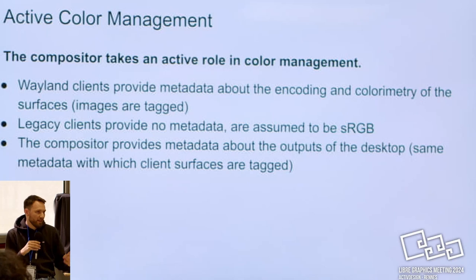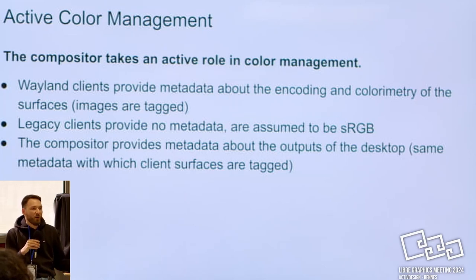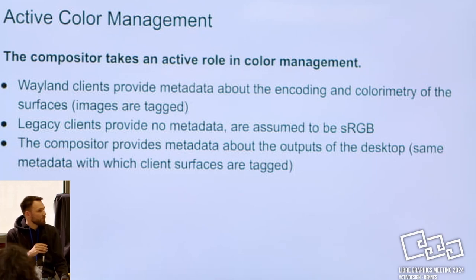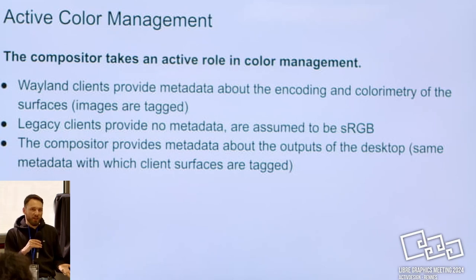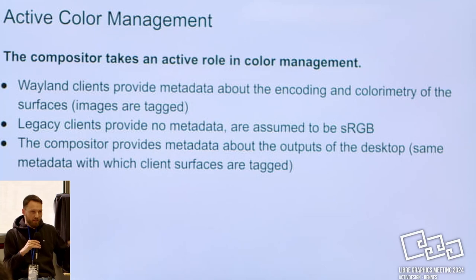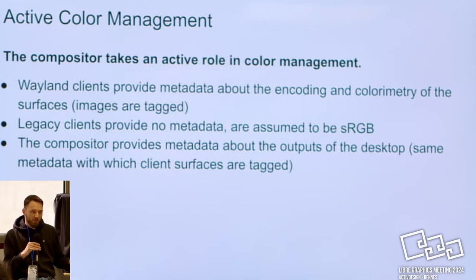The solution is that clients provide information about what they're doing, and for every client that doesn't know how to do that — which is currently all of them — we just assume we're dealing with sRGB content. The nice part is that if a surface's color is described completely and it matches the display's color properties, the compositor can basically skip doing any work. This is one of the design goals: we want to make it possible for the client to directly target whatever the display supports, and then the compositor can get out of the way. But if the client cannot do that, the compositor jumps in and does the correct thing.